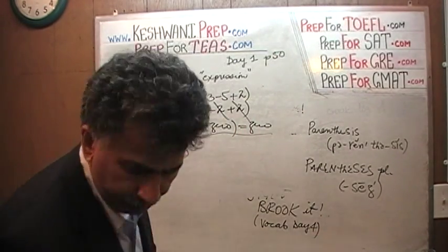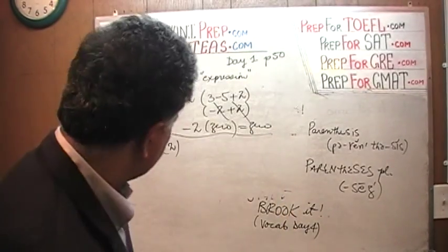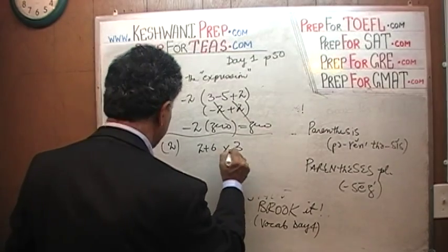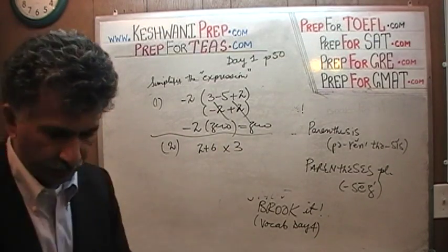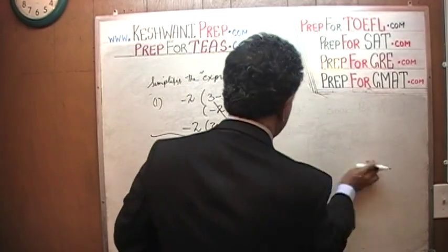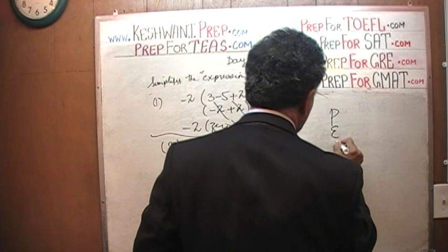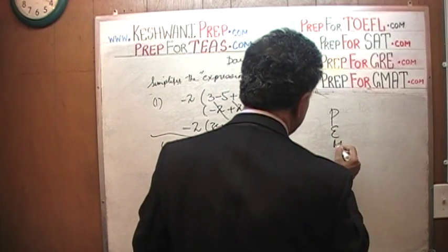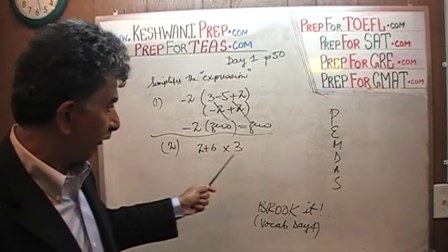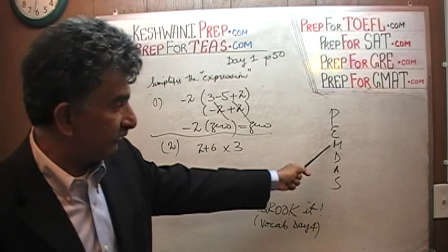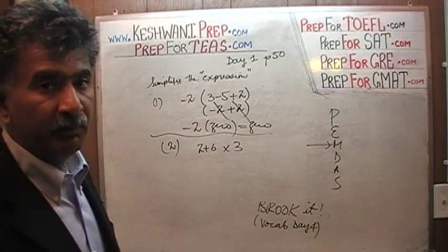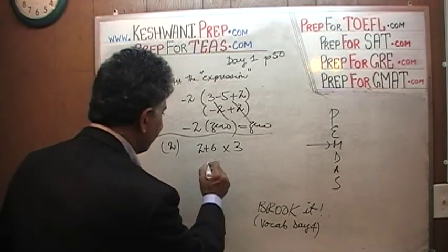Number two: 2 plus 6 times 3. This is where you have to pay very close attention. Listen to me very carefully. Parentheses, exponents, multiplication, division, addition, subtraction. PEMDAS. We have no parentheses here. We have no exponents here. The next thing, the third thing in our order of operations is multiplication. If we see any multiplication, we must do that first. If we were to do 2 plus 6 times 3, it would be wrong. If you see any multiplication, we have to do that first. So 6 times 3 has to be done first.